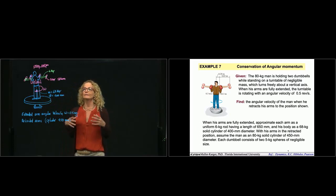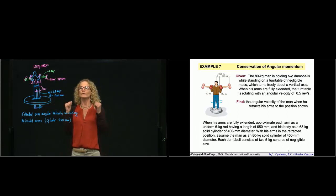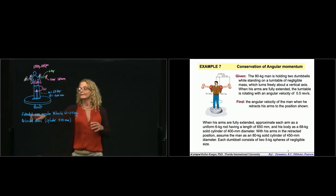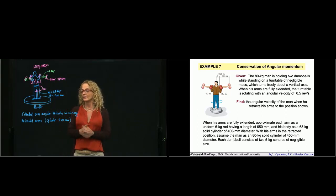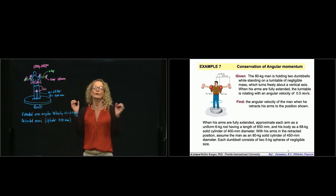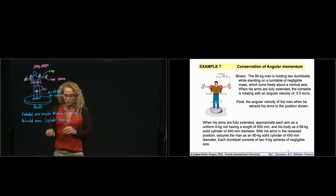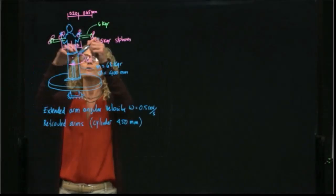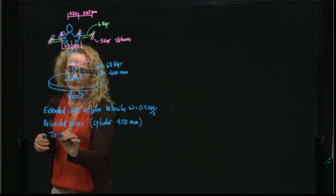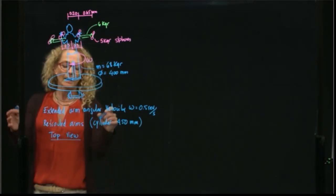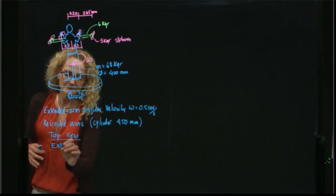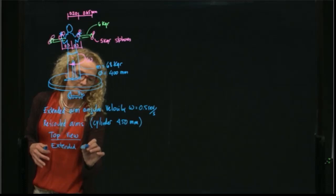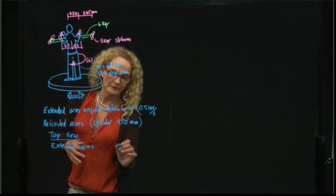What we want to find is the change in angular velocity when that person is extending and retracting the arms. We are told that when he has the extended arm, the angular velocity is 0.5 revolutions per second, and we want to find the angular velocity when he retracts the arms. He is considered a cylinder. Let's draw a top view for both the extended arms and retracted arms positions.